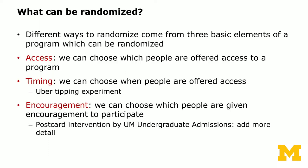What can be randomized? There are lots of different things that can be randomized depending on what you want to learn. There are three basic elements of a program that can be randomized. The first one is access — experimenters can choose which people are offered access to a program. The second aspect is timing — we can choose when people are offered access.